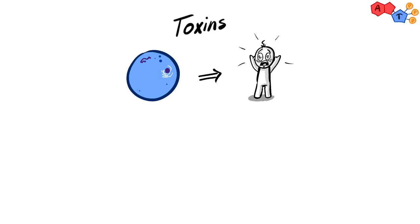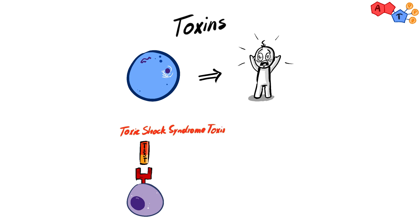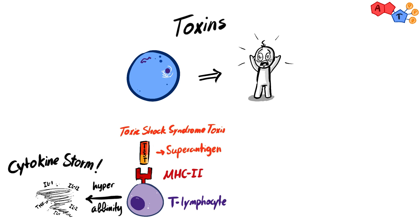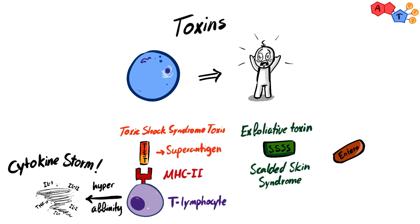Staph aureus also produces some toxins that can cause serious problems. First is toxic shock syndrome toxin, considered a superantigen with very high affinity to T-cell MHC class II receptors. After binding, the overactivation of T-cells results in a cytokine storm, which can be fatal. Then we have exfoliative toxin, which causes scalded skin syndrome. Lastly, there's enterotoxin, which causes rapid symptoms of food poisoning.